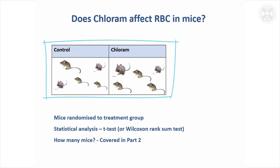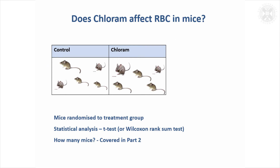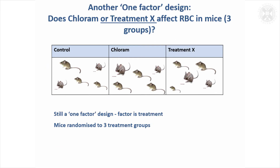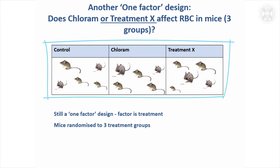We've got them allocated to the treatments for different mice. We would also think about what sort of statistical tests to use — here it would be something like a t-test or a Wilcoxon rank-sum test to analyse the data. We're fairly certain there are tests available, and of course we'd have had to consider how many mice to use, which we'll look at a bit later. A one-factor design doesn't need to just have two groups — it could have three or more, and we would just include that extra treatment in the randomisation.